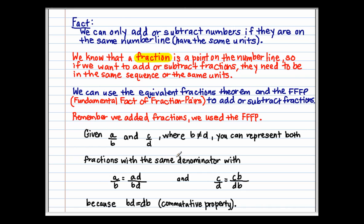You can represent both fractions with the same denominator by multiplying both the numerator and denominator of the first fraction by the other fraction's denominator, and take the other fraction, C over D, and multiply that numerator and denominator by the other fraction's denominator. We have the same denominators because BD is equal to DB, and we know this is true because of the commutative property. Using the commutative property, I can change the order of those numbers without changing the value.